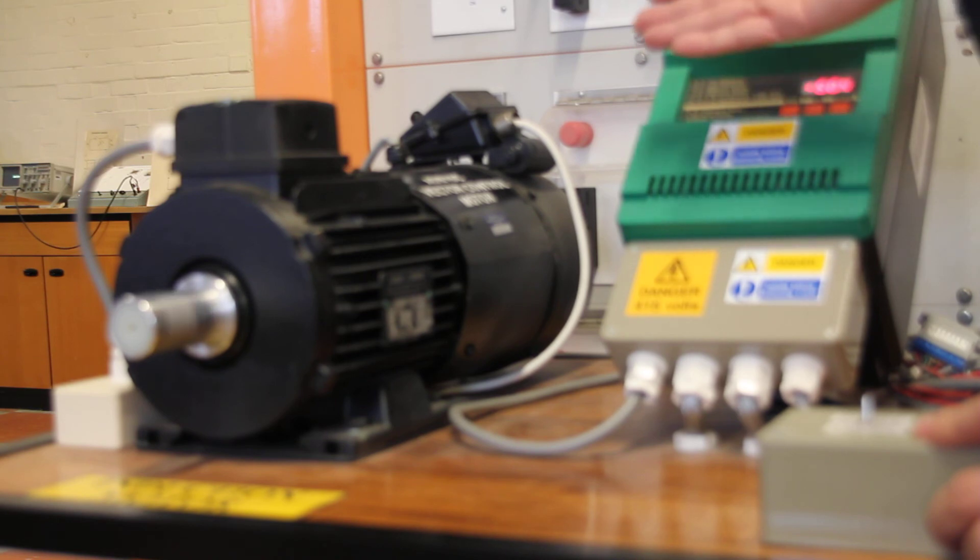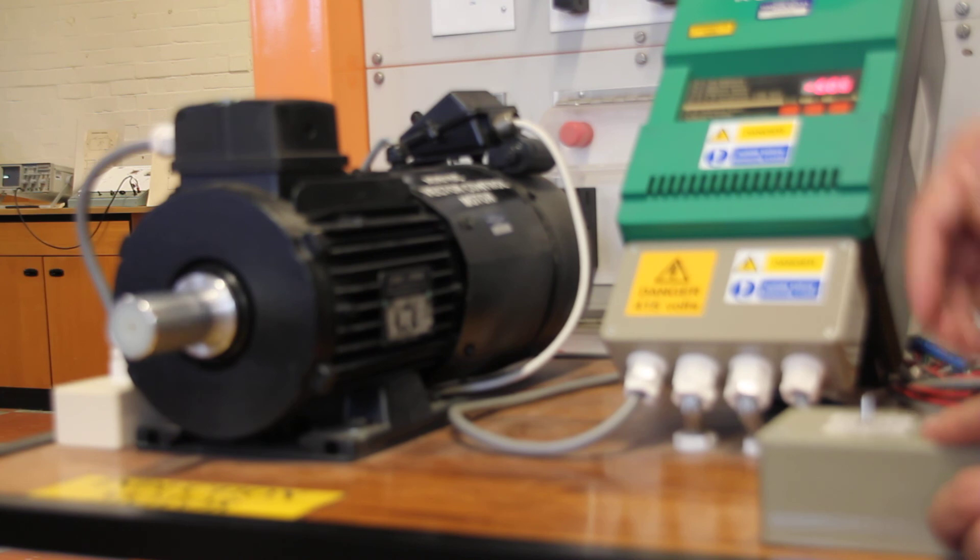It measures from the induction machine and generates the appropriate rotor position to impress the current onto the machine, so that it generates dynamic torque similar to a permanent magnet machine.